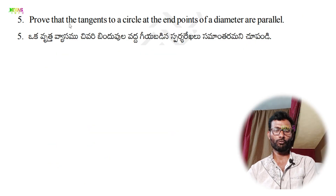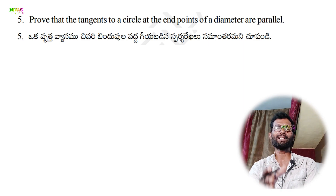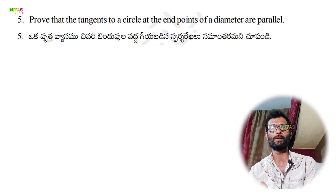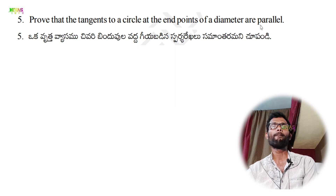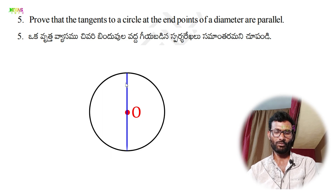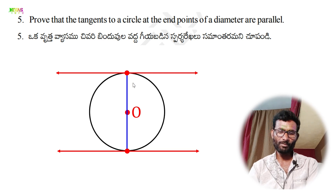Question 5: prove that the tangents to a circle at the end points of a diameter are parallel. A diameter divides the circle into exactly two parts through the center point. We know the tangents at the endpoints of the diameter should be parallel because each is perpendicular to the radius, making 90 degrees.